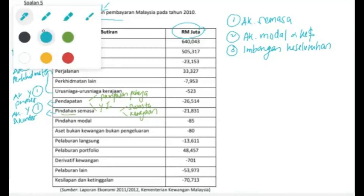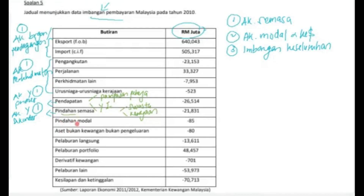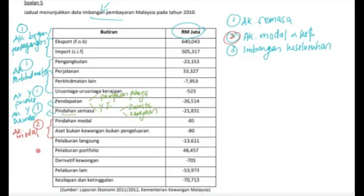Yang seterusnya kita ada pindahan modal, lepas itu kita ada aset bukan kewangan dan bukan pengeluaran. Sebenarnya ini terletak di bawah akaun modal. Maksudnya akaun modal itu ada dua komponen — ada pindahan modal, ada aset bukan kewangan dan bukan pengeluaran. Akaun modal itu sebenarnya adalah di bawah akaun modal dan kewangan.